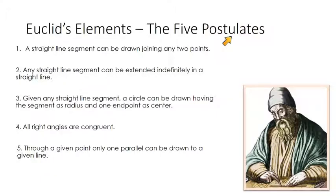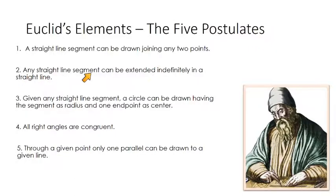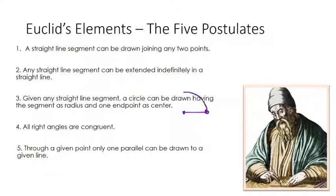Looking through these five postulates, they seem very straightforward. One: a straight line segment can be drawn between any two points — obviously true, not something we'd need to prove. Two: any straight line segment can be extended indefinitely into a straight line, so if you start with a segment you can keep going and it makes a line. Three: given any line segment, a circle can be drawn having the segment as a radius and one endpoint as its center — meaning if I have some segment, I can draw a circle that uses that segment as a radius.